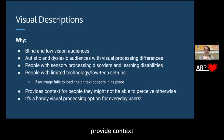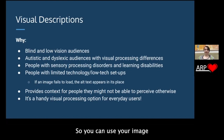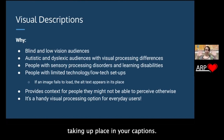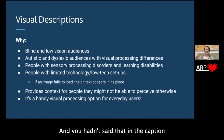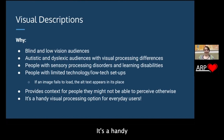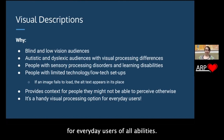Image descriptions provide context for people that they might not be able to perceive otherwise. You can use your image description to say, 'hey, we were at the beach for my birthday party,' as opposed to taking up space in your caption. Or they might not know who a person is — if you say 'this is my friend Sox Whitmore' and you hadn't said that in the caption, that lets them know who that is. It's a handy visual processing option for everyday users of all abilities.